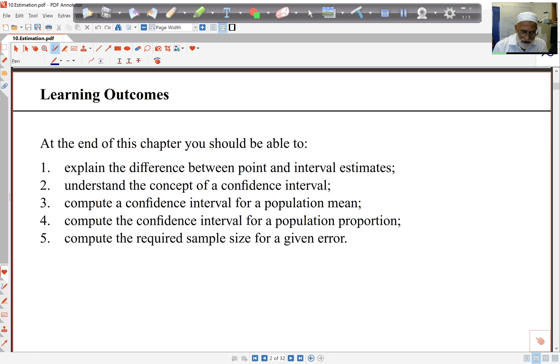Here we'll be taking a look at two kinds of estimators, point and interval estimators. We'll take a look at the concept of a confidence interval, and we'll compute confidence intervals for population means and population proportions, and then finally try and work out some sample size calculations for given standard errors.